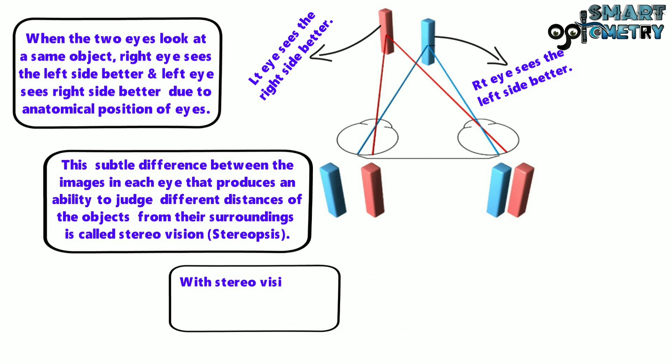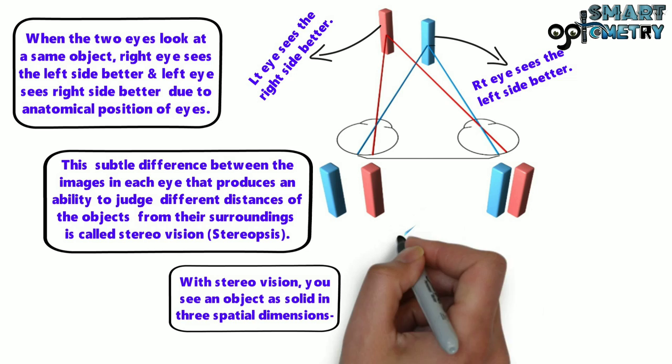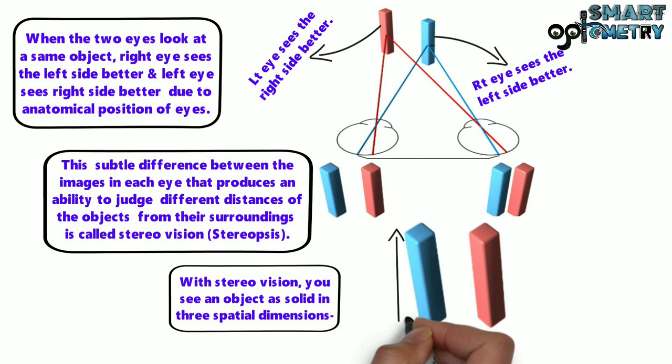With stereo vision, you see an object as solid in three spatial dimensions. So it is possible to perceive the height, width, and depth of these objects.